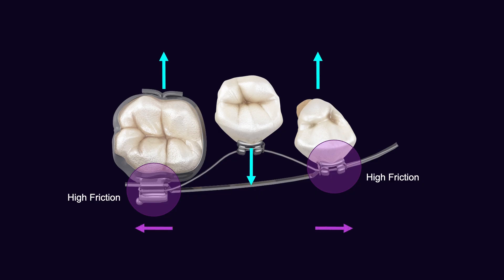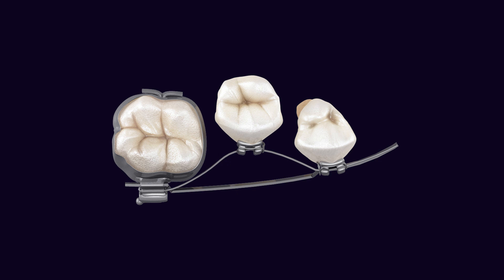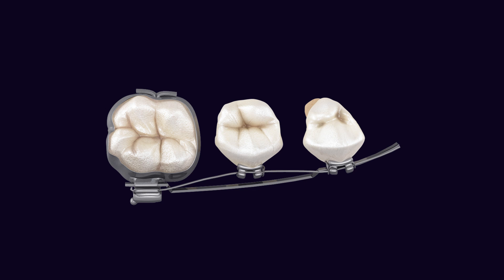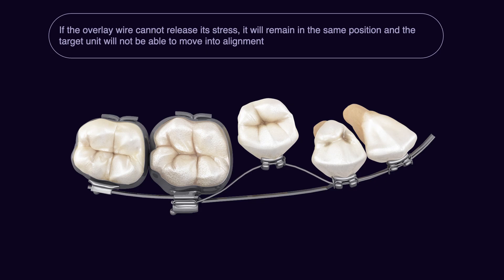This can happen in clinical scenarios if we are putting an overlay wire on the target unit and both sides have very high friction, to the extent that the wire cannot slide on top of the stiff wire. In that case, the wire either stays curved or it produces enough force to move the anchor unit. However, if the anchor units are too strong to be moved by the NiTi wire, the situation stays the same from one treatment session to the next — meaning you will not see any improvement in your treatment.